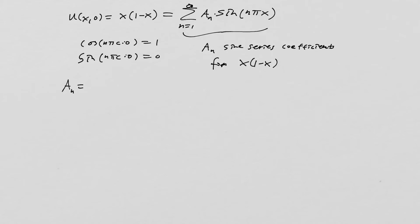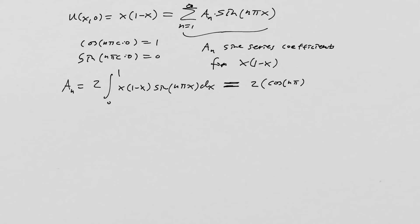The A_N values are going to be found from a formula in our reference sheets. It's the integral of X times (1 minus X) times sin(N pi X) dX. You can use a computer algebra system, Wolfram Alpha, or do it by hand — it would take a page or two. The result is 2 times (cosine(N pi) plus 1) all over pi cubed times N cubed.